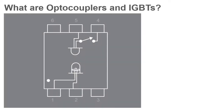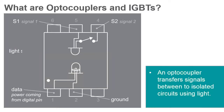An optocoupler, also called an optoisolator, photocoupler, or optical isolator, is an electronic component that transfers electrical signals between two isolated circuits using light. It allows the transfer of signals without the use of an electrical conductor, and thus allows two circuits to share signals while still remaining electrically isolated.